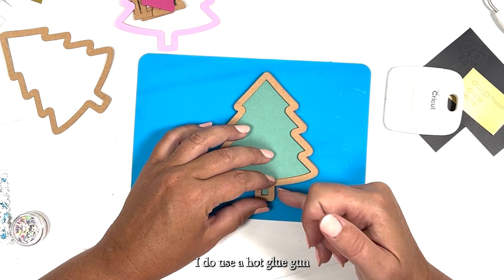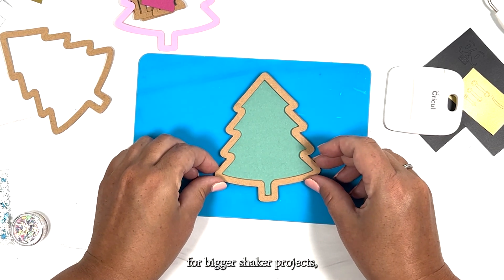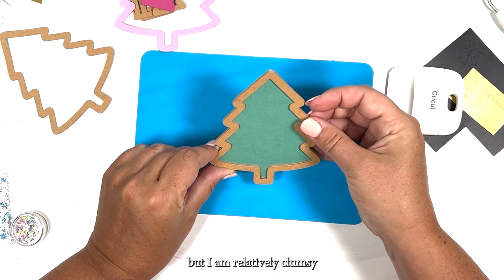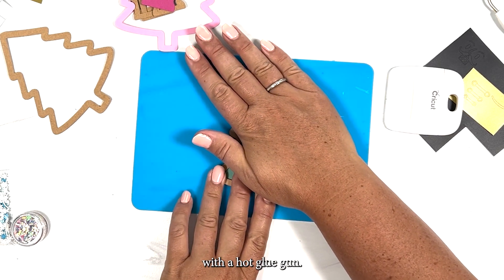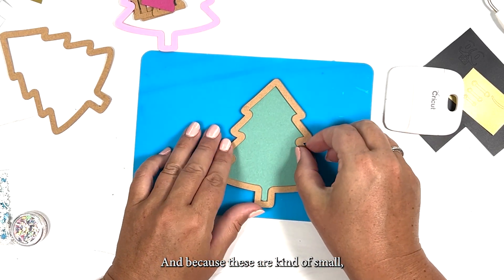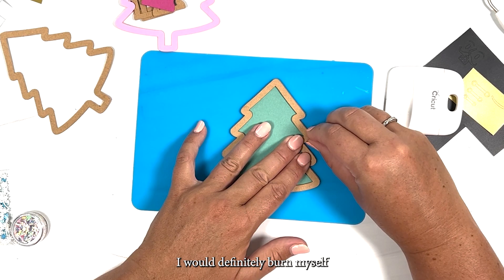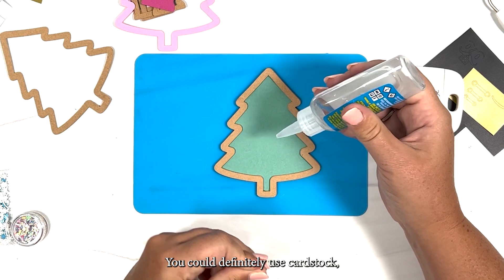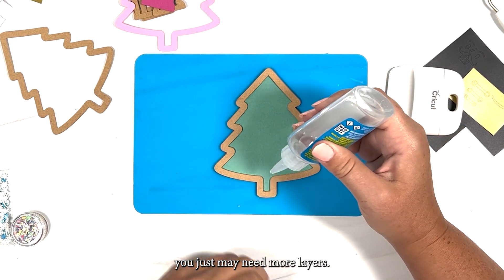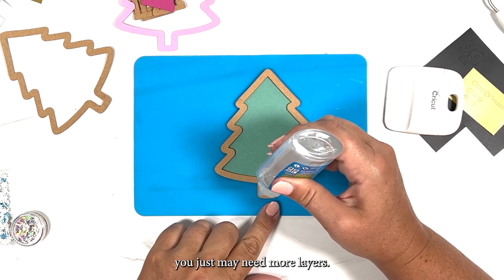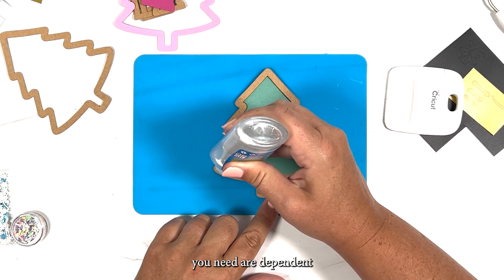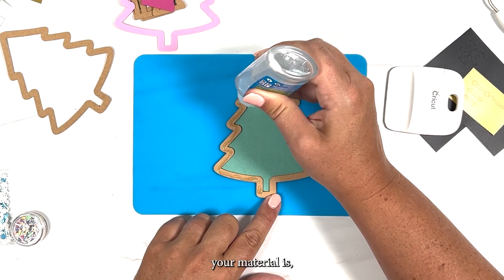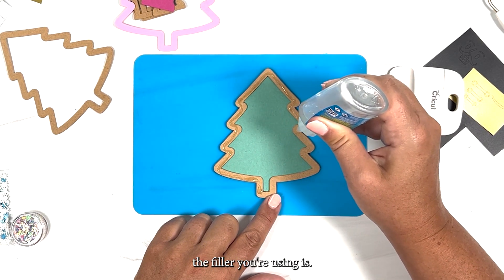I do use a hot glue gun for bigger shaker projects but I am relatively clumsy with a hot glue gun and because these are kind of small, I would definitely burn myself over and over. There are alternatives to using craft board too. You could definitely use cardstock, you just may need more layers. The amount of layers you need are dependent on how thick your material is as well as how thick the filler you're using is.